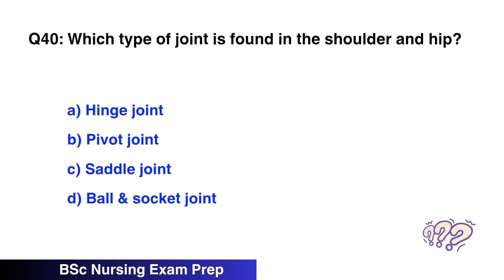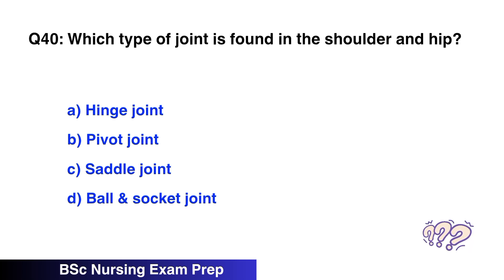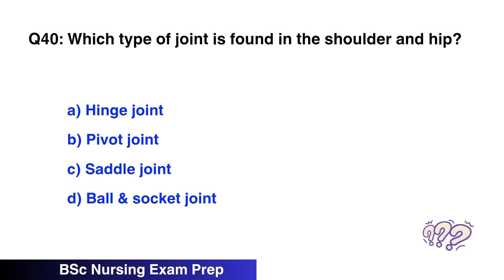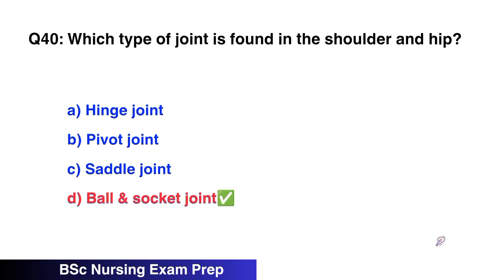Question number 40: Which type of joint is found in the shoulder and hip? The right option is the ball and socket joint.